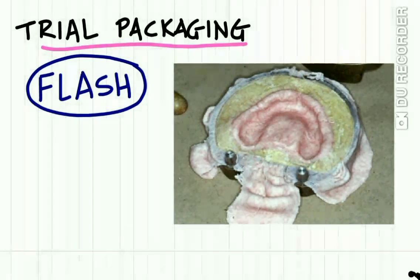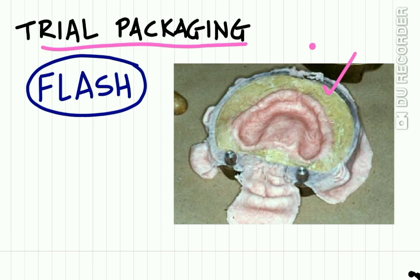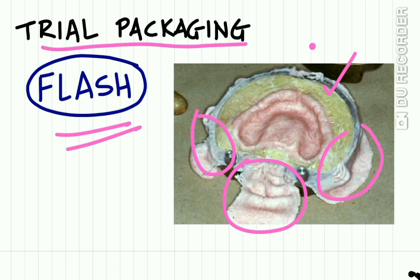Trial packing is done using a cellophane film as a separator. A cellophane strip is placed over the dough and pressure is applied, causing excess dough (called flash) to flow out of the mold. This flash is discarded by trimming, and then the cellophane strip is removed.